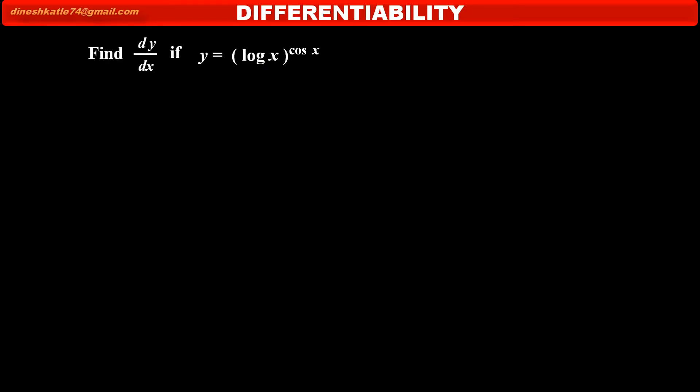We have to find dy/dx if y is equal to (log x)^(cos x). The given function is y = (log x)^(cos x). Here, both the base and the exponent contain the variable x. Therefore, we can make it easier by using log on both sides.